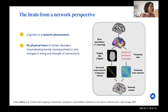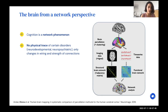Why are we interested in looking at the brain from a network perspective? One main reason is that cognition is a network phenomenon — many cognitive functions arise from interactions between functional units in the brain, where regions specializing in certain functions coordinate to produce more complex behaviors. Another reason is that for several neurodevelopmental and neuropsychiatric disorders, there is no physical trace visible in an MRI scan, only changes in the wiring or strength of structural or functional connections.